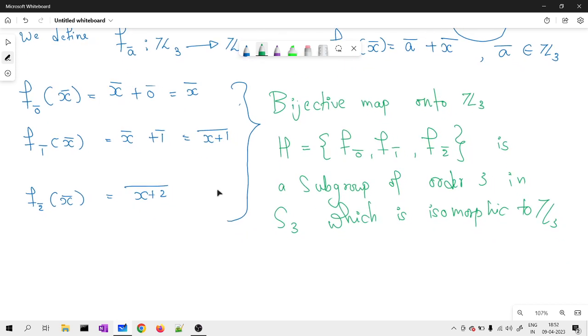And how can you see it is isomorphic to Z3? Because we wrote over here as a function, but if I see more precisely, if I consider F of 0̄, it is x̄ goes to x̄. So, what can I observe? This is nothing but 1̄ goes to 1̄, 2̄ goes to 2̄, and 0̄ goes to 0̄.